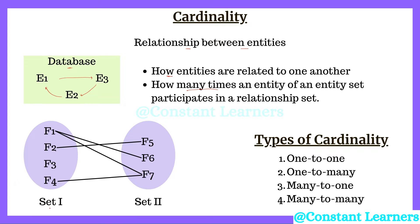Here we have two entity sets, set one and set two. In set one we have four entities: F1, F2, F3, and F4. In set two we have three entities: F5, F6, and F7. F1 is connected to F6 and F7, thus establishing a one-to-many relationship. Then F2 in set one is linked to F5 in set two, thus establishing a one-to-one relationship.